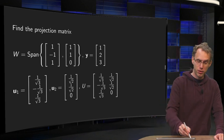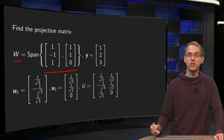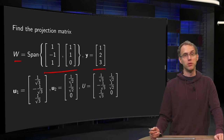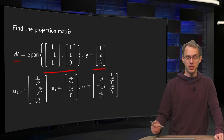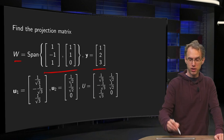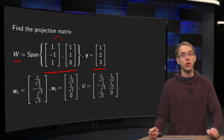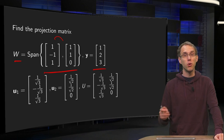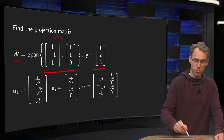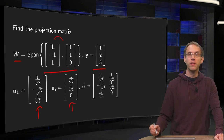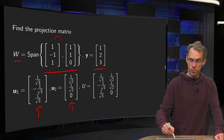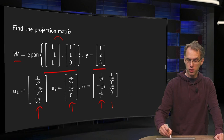We have W given as a span of two vectors, and we have some vector y. Now first we want to compute the projection matrix. We notice that those two vectors are already orthogonal, but in order to find a projection matrix we need orthonormal vectors, so we normalize and we get our u1 and u2, and we can immediately form our matrix U with the columns u1 and u2.